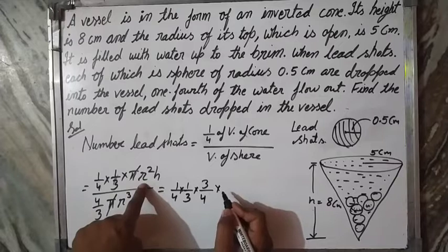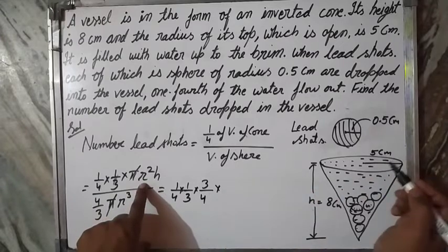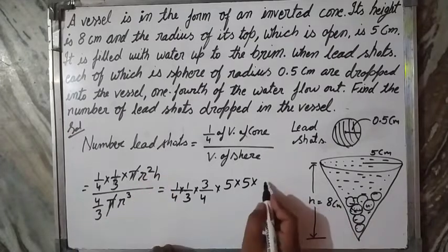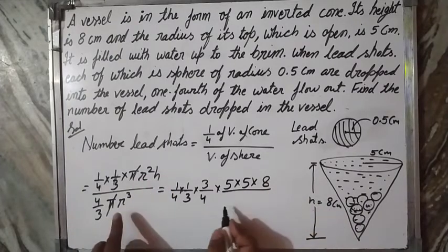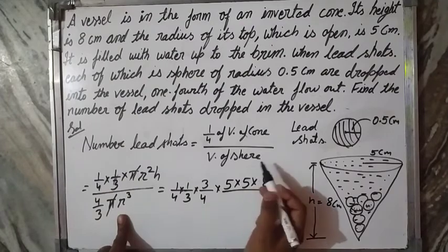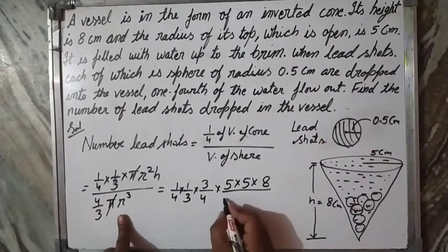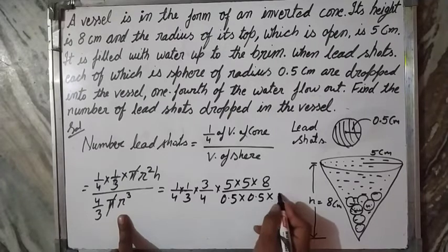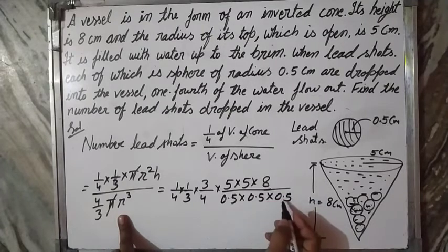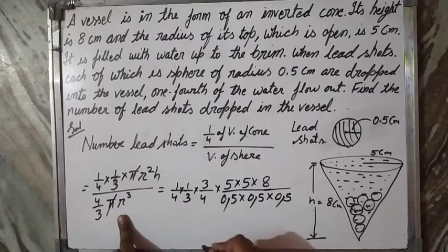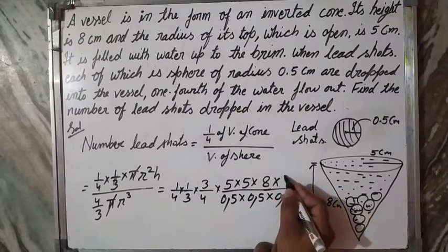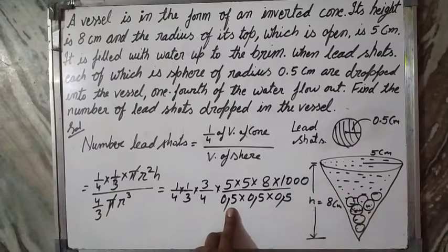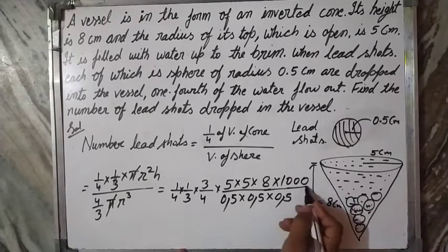Radius of cone is 5 cm, so we put 5 times 5, and height of cone is 8. Radius of sphere is 0.5 cm: 0.5 times 0.5 times 0.5. Now remove all decimals: for one decimal, 10 to the 1, and one decimal to be 1.